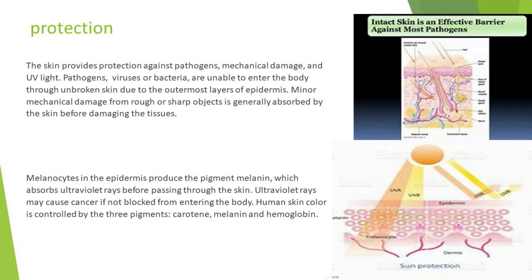Melanocytes in the epidermis produce the pigment melanin, which absorbs ultraviolet rays before they pass through the skin. Ultraviolet rays may cause cancer if not blocked from entering the body.